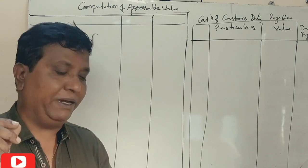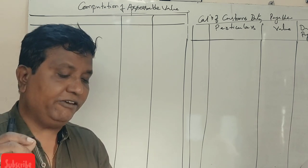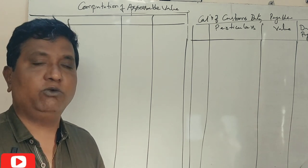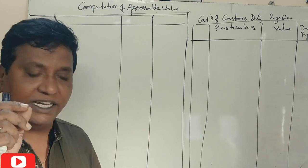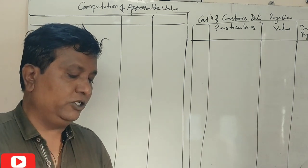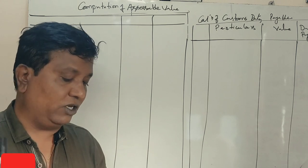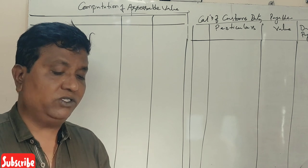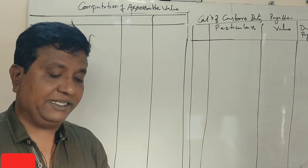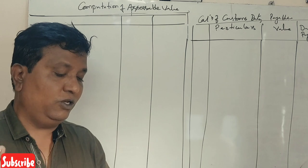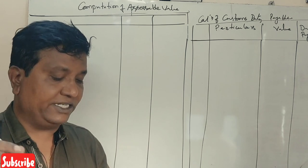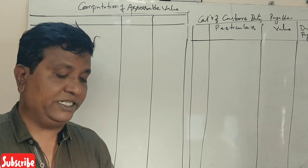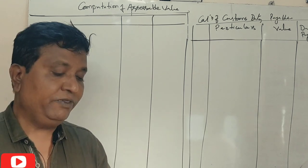A consignment is imported by air. The CIF price is $2500. Here the FOB value is given. Air freight is $600. Insurance cost is $75. The exchange rate announced by CBEC as per customs notification is $1 equals to ₹65. Basic customs duty payable is 10%, social welfare surcharge is applicable, and IGST rate is 18%.